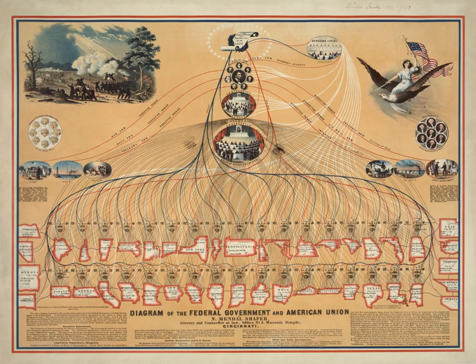There are also independent agencies such as the United States Postal Service, the National Aeronautics and Space Administration, the Central Intelligence Agency, the Environmental Protection Agency, and the United States Agency for International Development. In addition, there are government-owned corporations such as the Federal Deposit Insurance Corporation and the National Railroad Passenger Corporation.